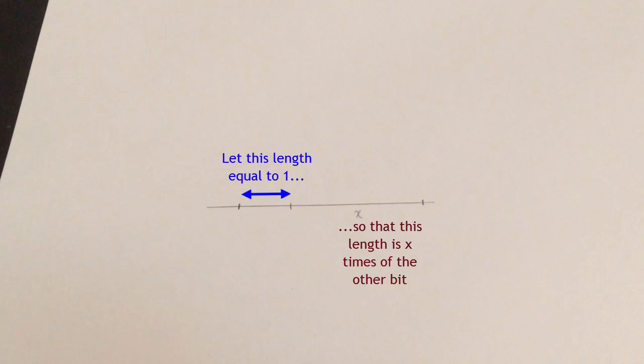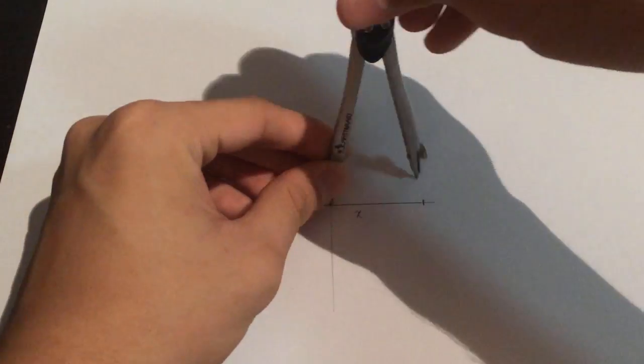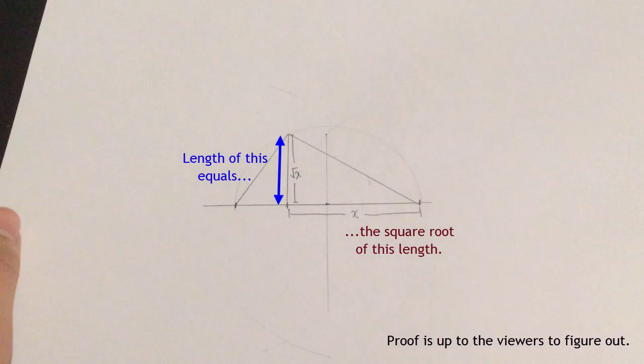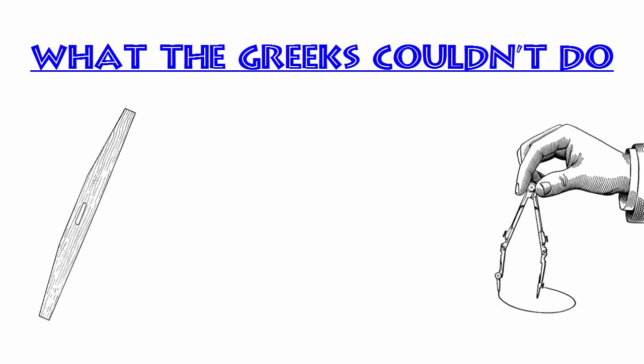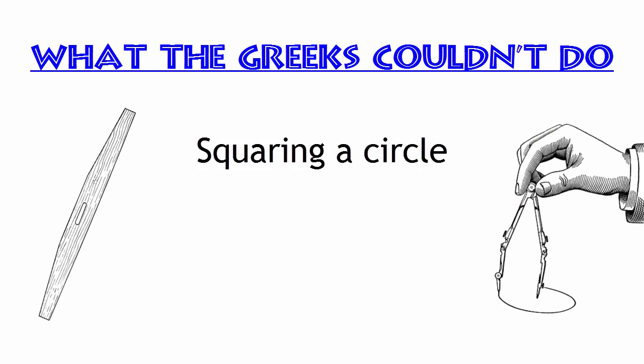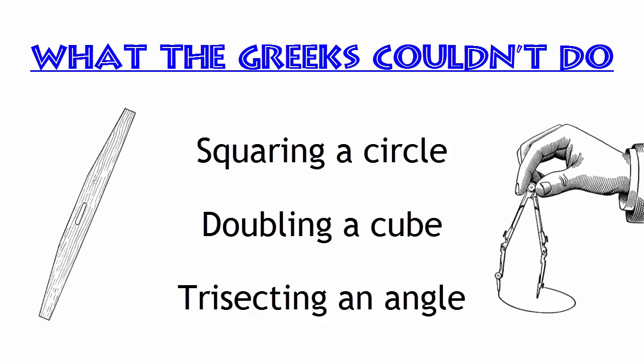The Greeks were able to make many different constructions. They were able to make regular shapes like hexagons, and if they had a line of a certain length, they were even able to construct another line whose length is the square root of that first line. But there were three different problems they couldn't do with just the line and the circle: squaring a circle, doubling a cube, and trisecting an angle.